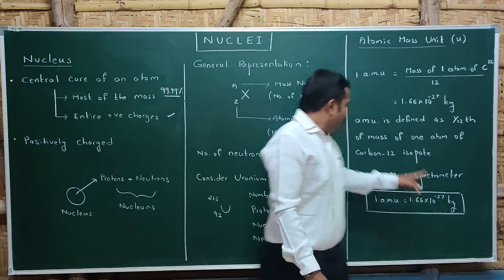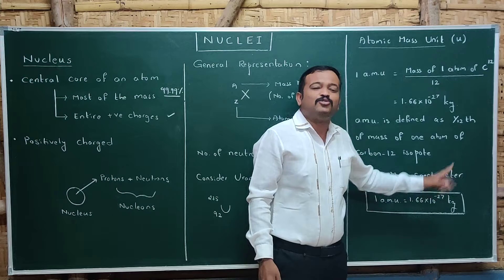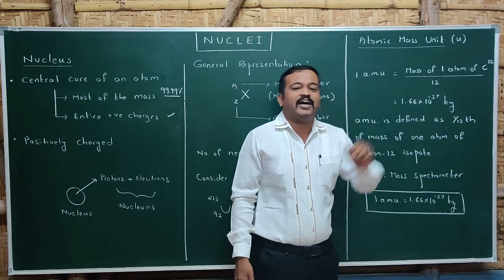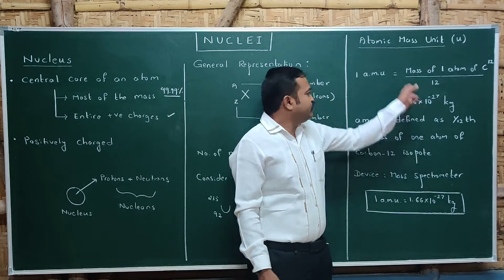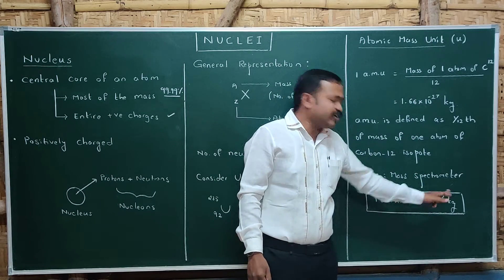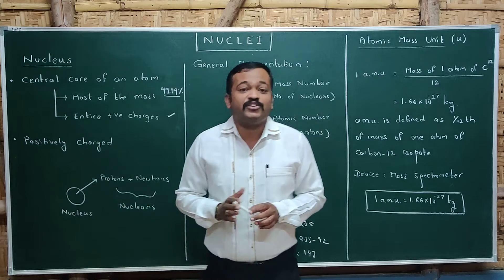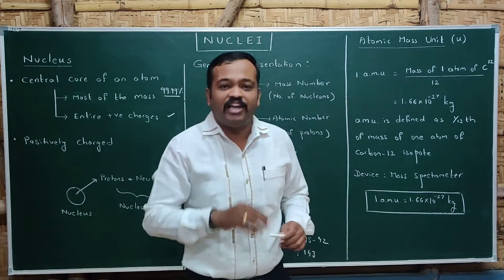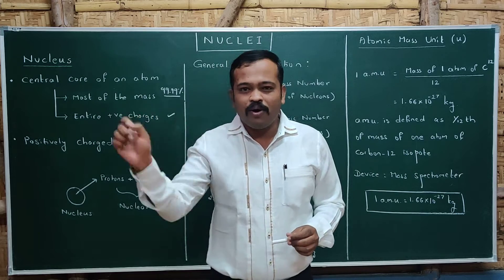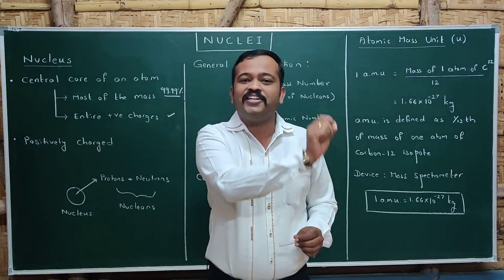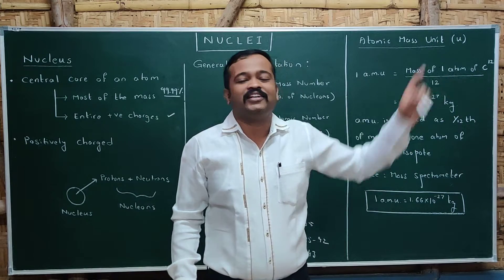We use a mass spectrometer to measure the mass of atoms and nuclei. Remember: 1 amu = 1.66 × 10⁻²⁷ kg. Whenever we study atoms and nucleons, masses will be expressed in amu. If you want to convert to kilograms, you need to know this relation: 1 amu is equal to 1.66 × 10⁻²⁷ kg.